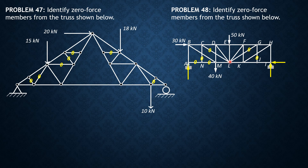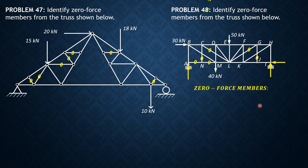If we proceed to joint L, there are five members attached, so joint L does not qualify as Case 2. Therefore, the zero-force members are: AN, NM, CN, CL, GJ, and GL. That's it for this problem.